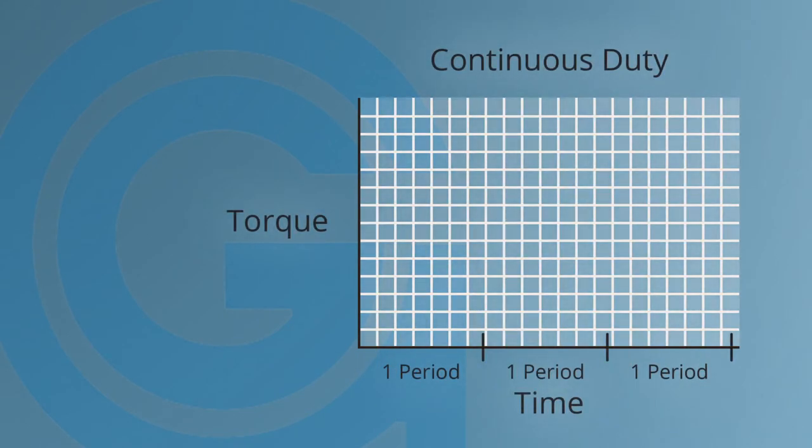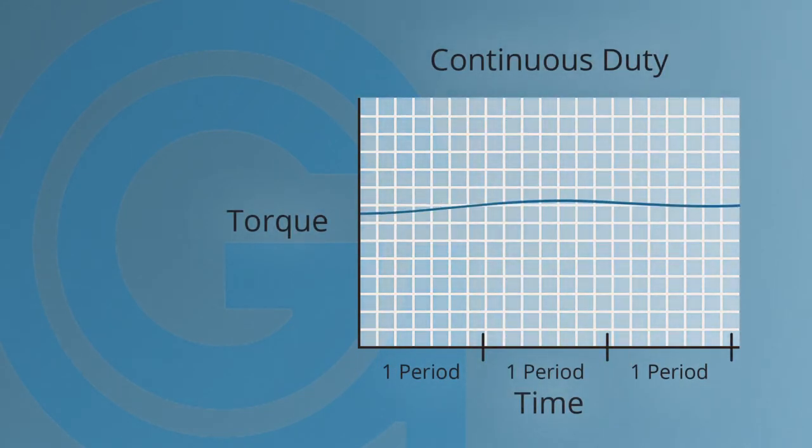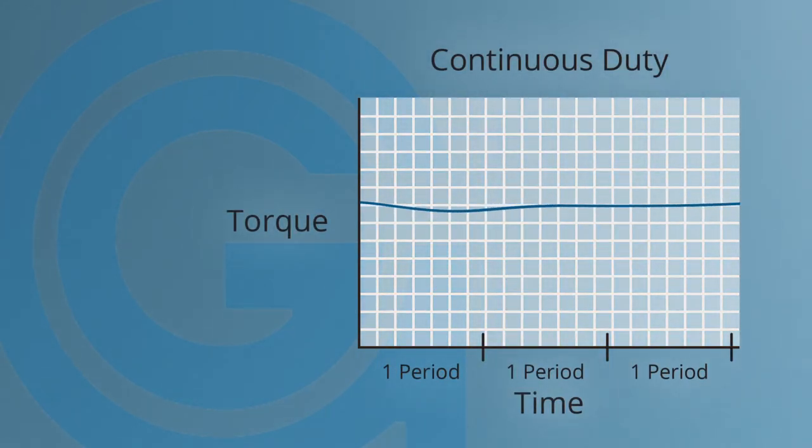This is why duty cycle is important. If your application requires continuous operation at a set load point, the motor will need to be able to stabilize a temperature within its temperature rating while running continuously.